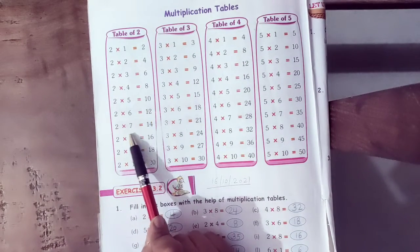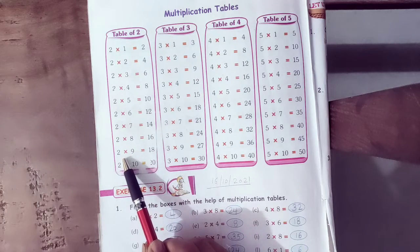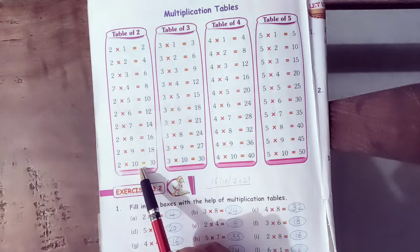2 sixes are 12, 2 sevens are 14, 2 eights are 16, 2 nines are 18, 2 tens are 20.